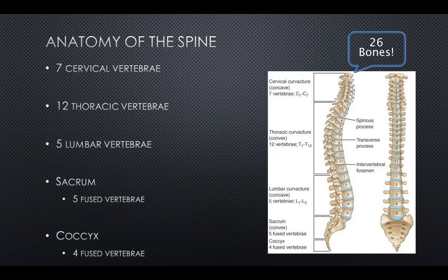There are 26 bones in the spine. It is easy to remember the number of bones within the sections of the spine as they correspond to times we eat: 7, 12, and 5. There are 7 cervical vertebrae, 12 thoracic vertebrae, 5 lumbar vertebrae. The sacrum is comprised of 5 fused vertebrae, and the coccyx contains 4 fused vertebrae.